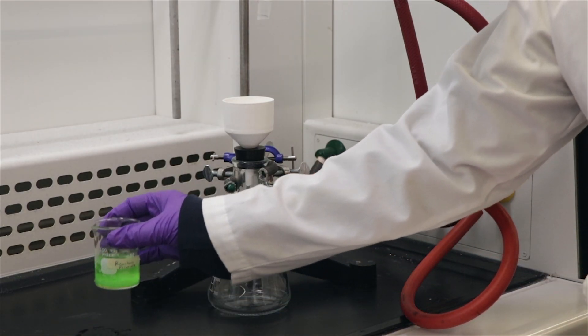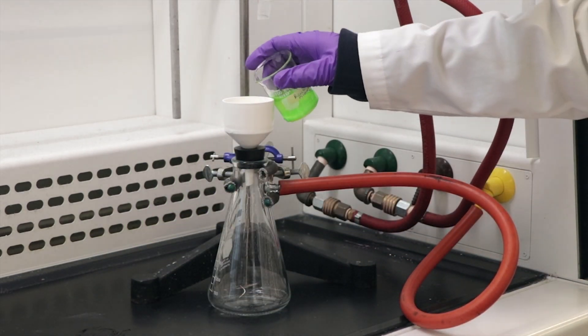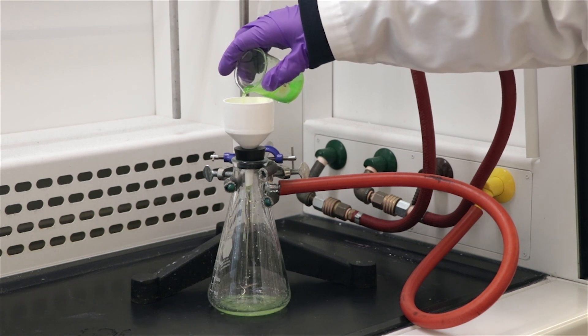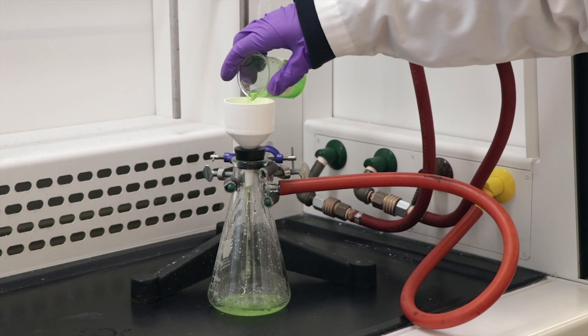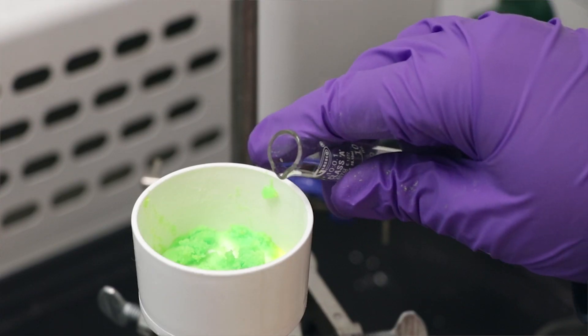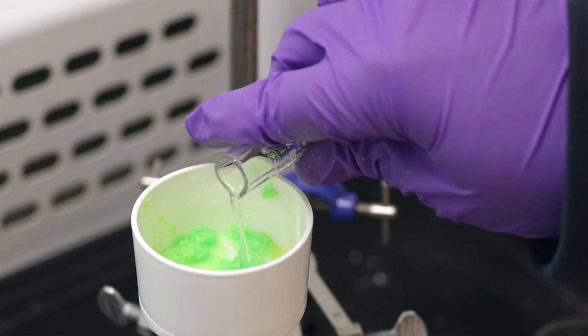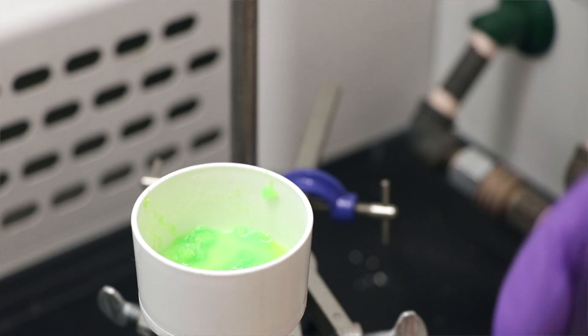Once your product has precipitated, you can now proceed to filtering it. Pour your crystals through the Buchner funnel while the vacuum is on and let your crystals dry. Once your crystals dry, add a few milliliters of ethanol to your crystals uniformly to wash them from any excess filtrate.